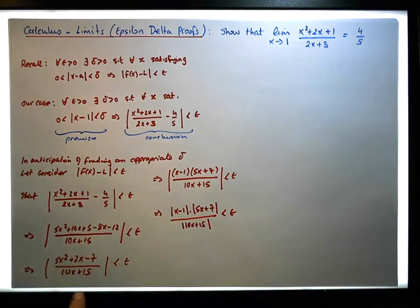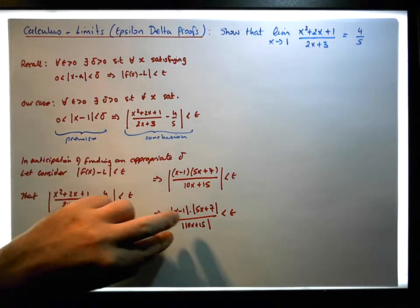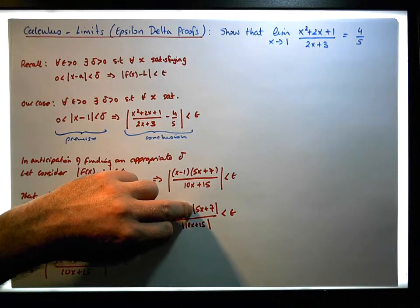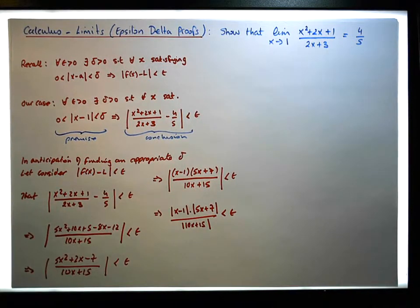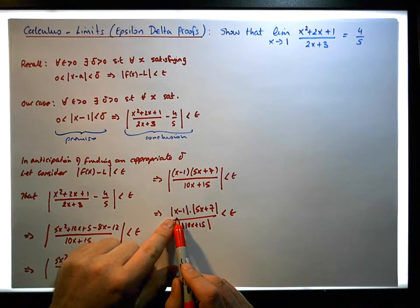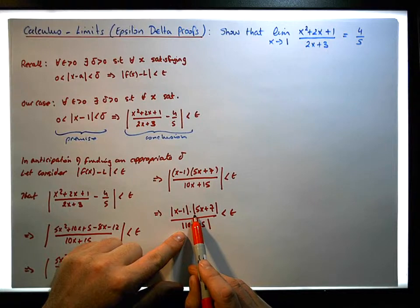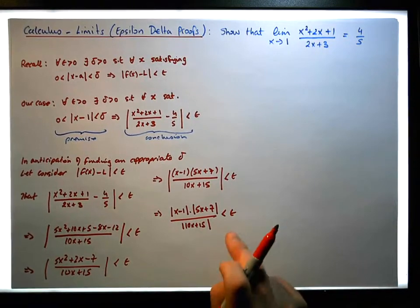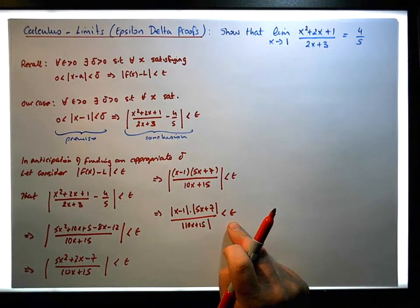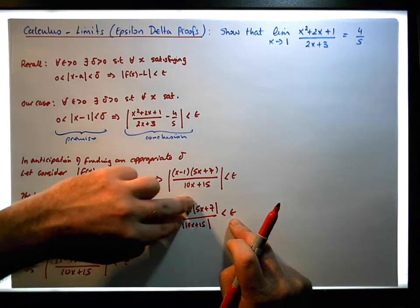We've reduced the conclusion down into something that looks similar to the premise. We have the x minus 1 there, but we have a little bit of baggage — we have the absolute value of 5x plus 7 and 10x plus 15 just hanging around there. We could argue that x minus 1 is less than the absolute value of 10x plus 15 divided by the absolute value of 5x plus 7 times epsilon, but we need to find an appropriate delta that's just in terms of a real number, or a real number and epsilon — we don't want any x values in there.